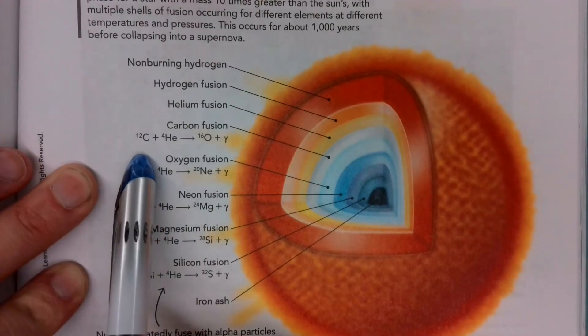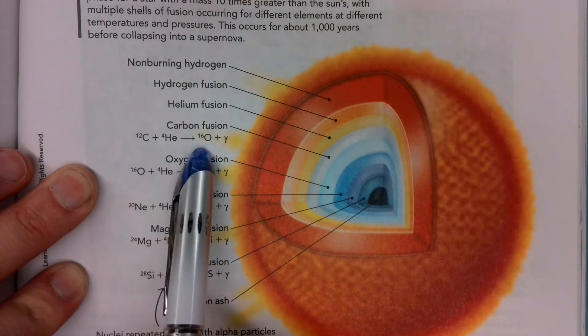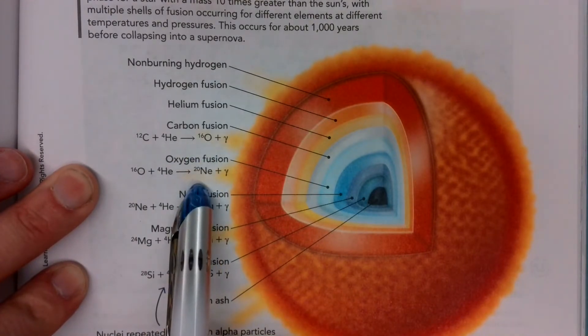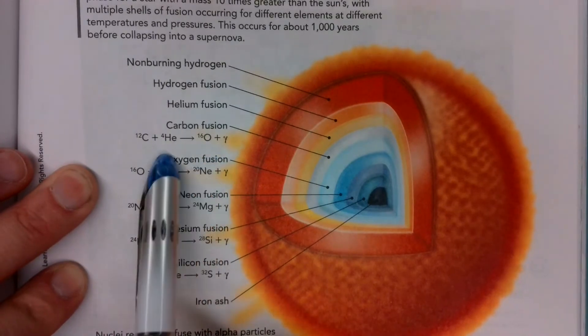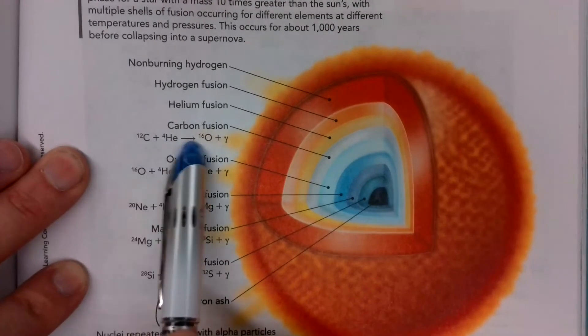You'll notice that there's a set of two. It starts with carbon, which has six protons, to oxygen, which has eight protons. From oxygen to neon, which has ten protons. We're adding two protons, because a helium atom has two protons. And its atomic mass increases by four.